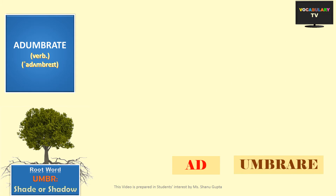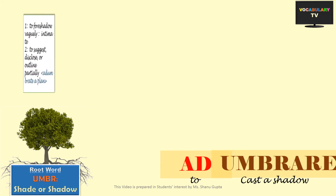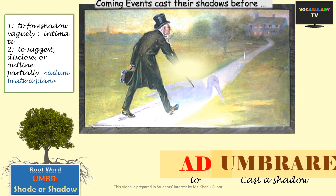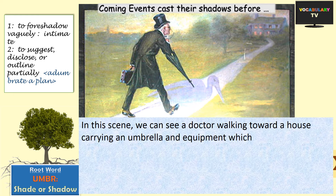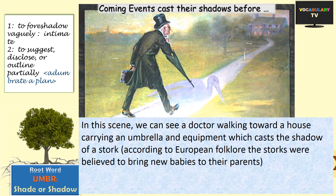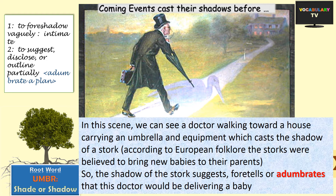Our next word is adumbrate. Made up of the prefix 'ad' meaning 'to' and 'umbrare' meaning shade or shadow, the word literally means to cast a shadow. It means to outline or foreshadow, and is used as a verb — a synonym for actions where you want to intimate or suggest something. For example, in this scene we can see a doctor walking towards a house carrying an umbrella and equipment which casts the shadow of a stork. According to European folklore, storks were large birds believed to bring new babies to their parents, so the shadow cast adumbrates — foretells — that this doctor would be delivering a baby.